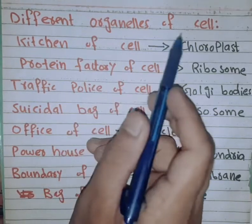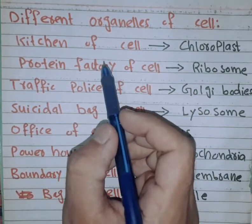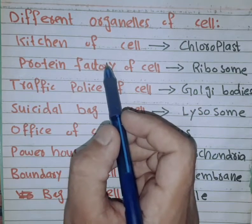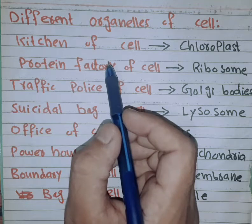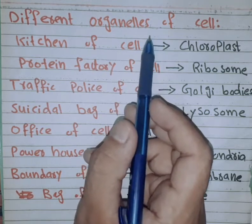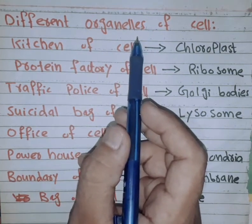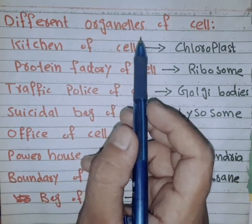Different organelles of the cell. First of all, the cell will be introduced to plants, animals, humans, and microorganisms.